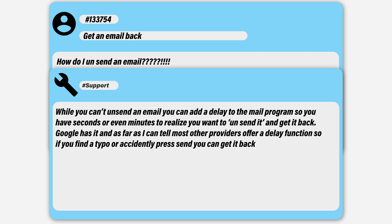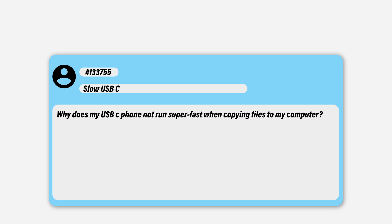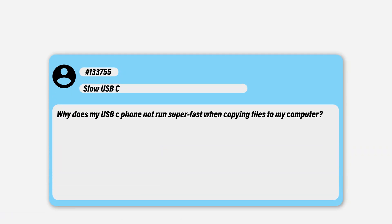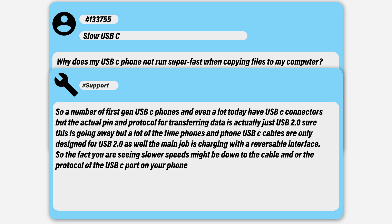Google has this feature, and most other mail providers and even mail clients also offer a similar feature that allows you to pull your mail back before it actually sends out. Next question: why does my USB phone not run at super fast USB speeds when copying to my computer? Most likely because it's not actually running at USB 3. A lot of first generation phones use a USB-C connector, but they're not actually running the USB 3.0 protocol — they're running just standard USB 2.0. Their really main job is for charging with a reversible interface.